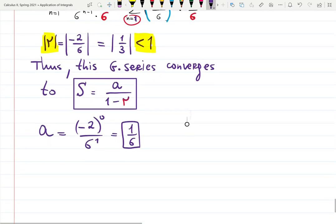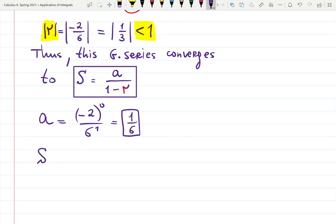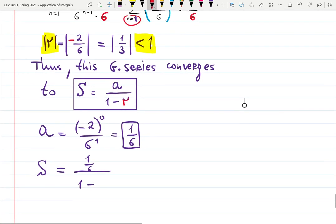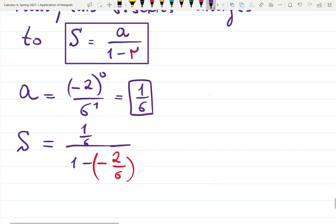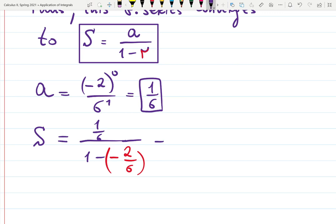Thus it converges to a sum S which is one over six, over one minus r, which is one-third. Actually, r is not one-third. Be careful with that. It's minus one-third. Remember that the original r is minus two over six. Let me write down minus two-sixths so you have good notes.